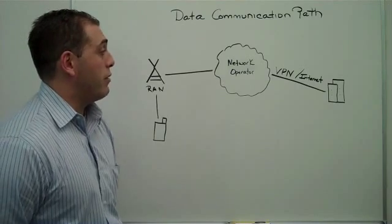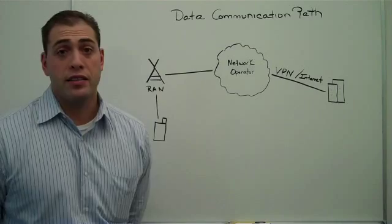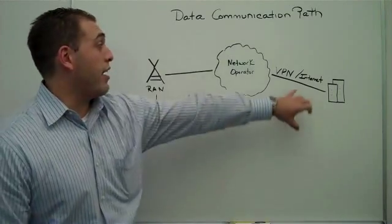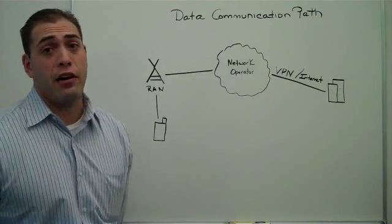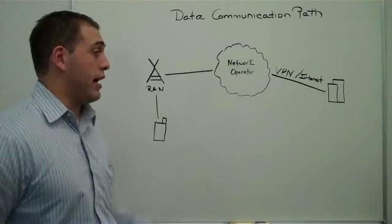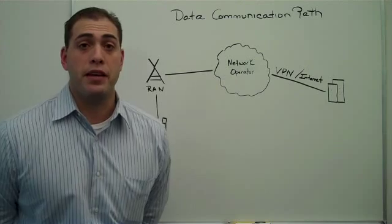The problem with doing mobile terminated data over an Internet connected session is that the IP address often changes and the carrier oftentimes will not allow the traffic to flow back through their network down to the device. For those types of applications, we generally recommend that you utilize a VPN.